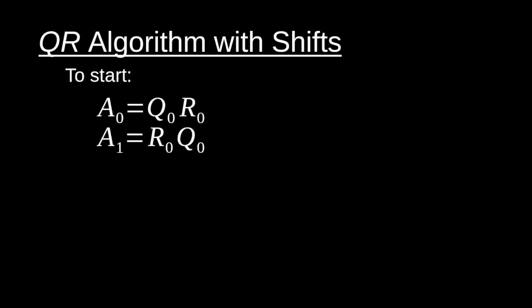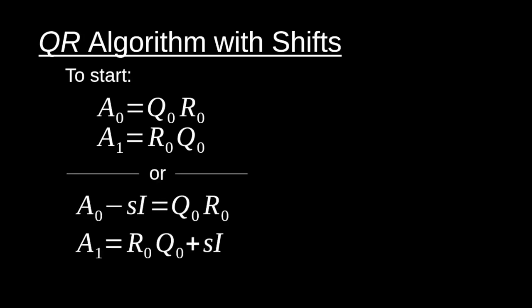The second numerical method is the QR algorithm with shifts, which is really just the QR algorithm with a shift. We can start in two ways: the first is to just do the first step of the QR algorithm — computing a QR matrix decomposition for our matrix A0 and then computing a similar matrix A1 using R0 and Q0. Or we can introduce the idea of a shift right from the beginning.